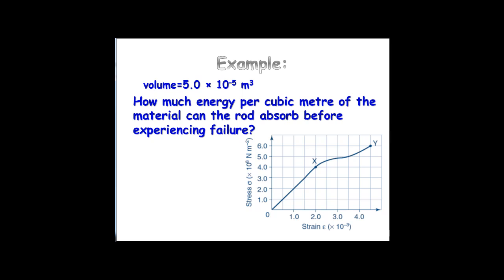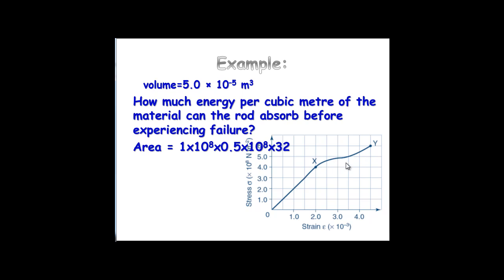How much energy per cubic metre? That's per unit volume, so that's just the area under the graph — no further calculation needed. The area of one square is 1 times 10 to the 8 times 0.5 times 10 to the negative 3. Count up the number of squares and estimate the fractional parts — roughly 1 full square and about 2 in the curved region. It's a bit of a guesstimation, and we get about 1.6 megajoules per metre cubed.